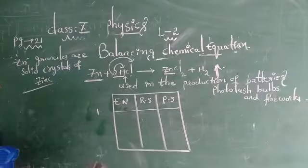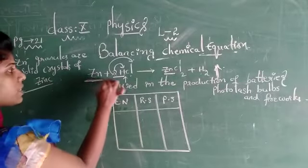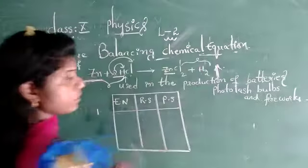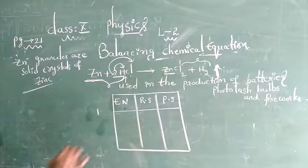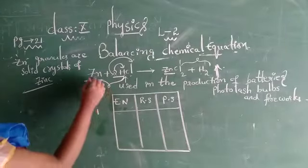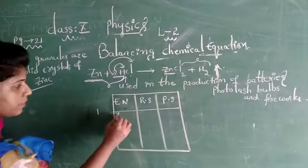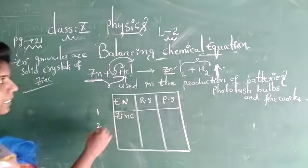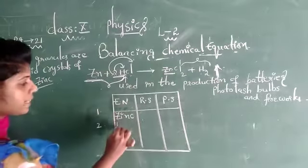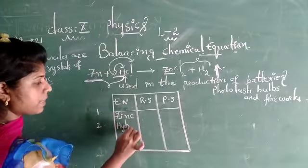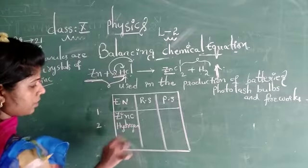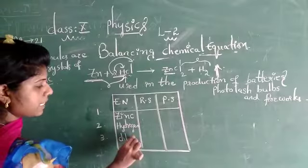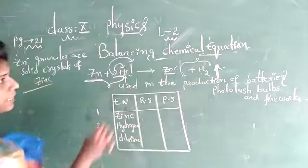Try to enter the values which are present on the reactant side and which are present on the product side. We have to enter the element names: Zn (zinc), denoted with symbol Zn. Next, hydrogen, denoted with symbol H. Next, chlorine, denoted with symbol Cl. This is completed.